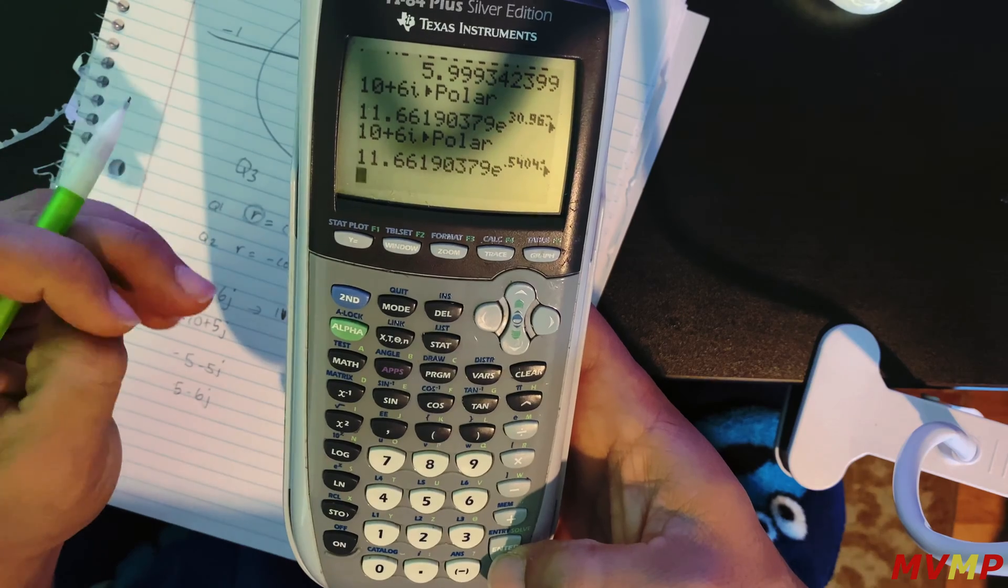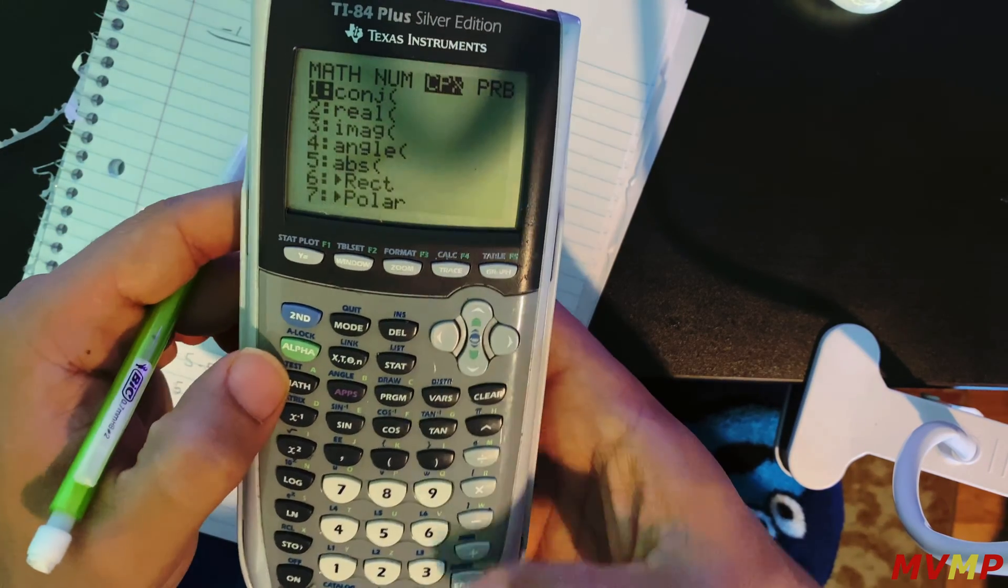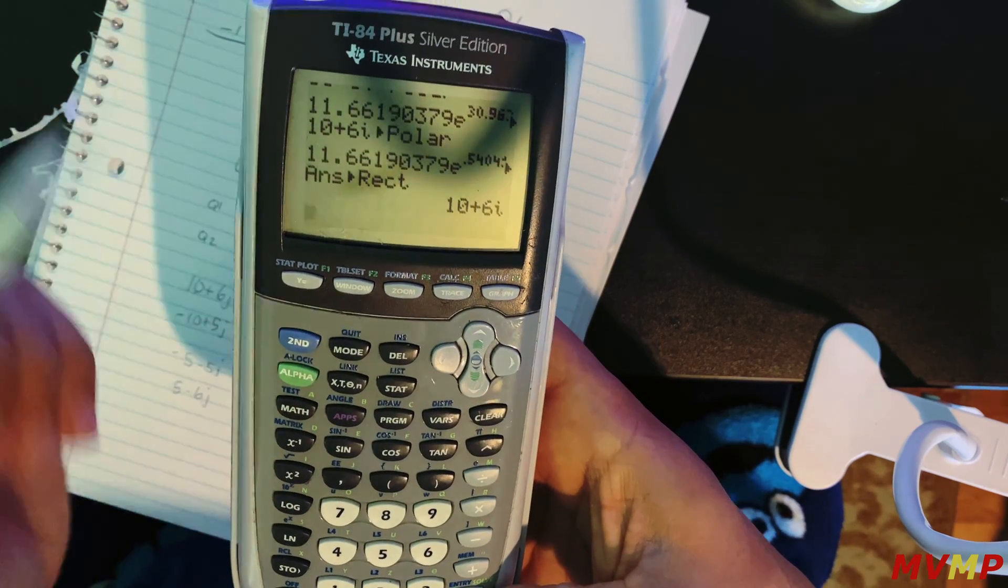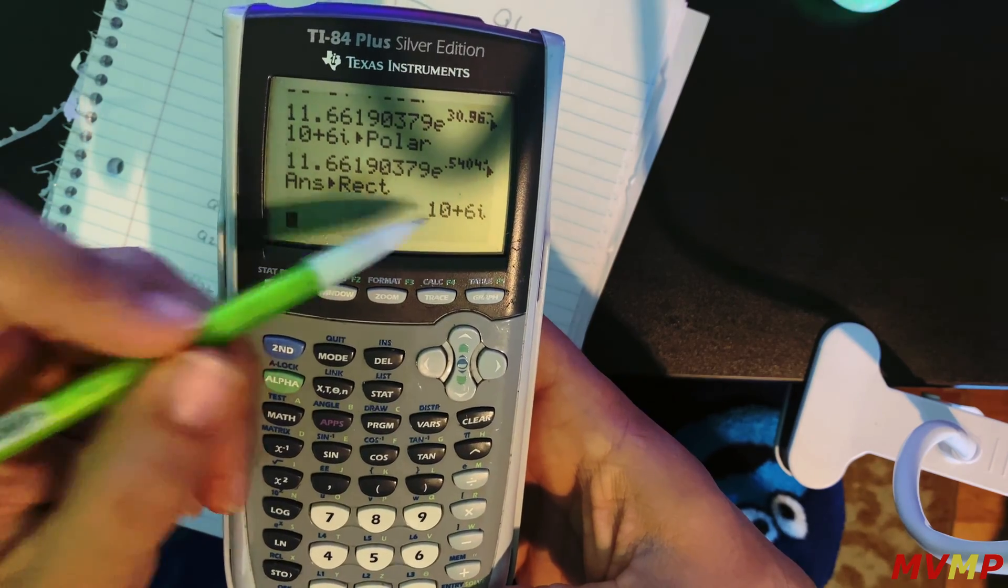Now if we wanted to go the other way around, what we would do is go math, complex. Now we want to go to rectangle. As you can see you get your original rectangular form back.